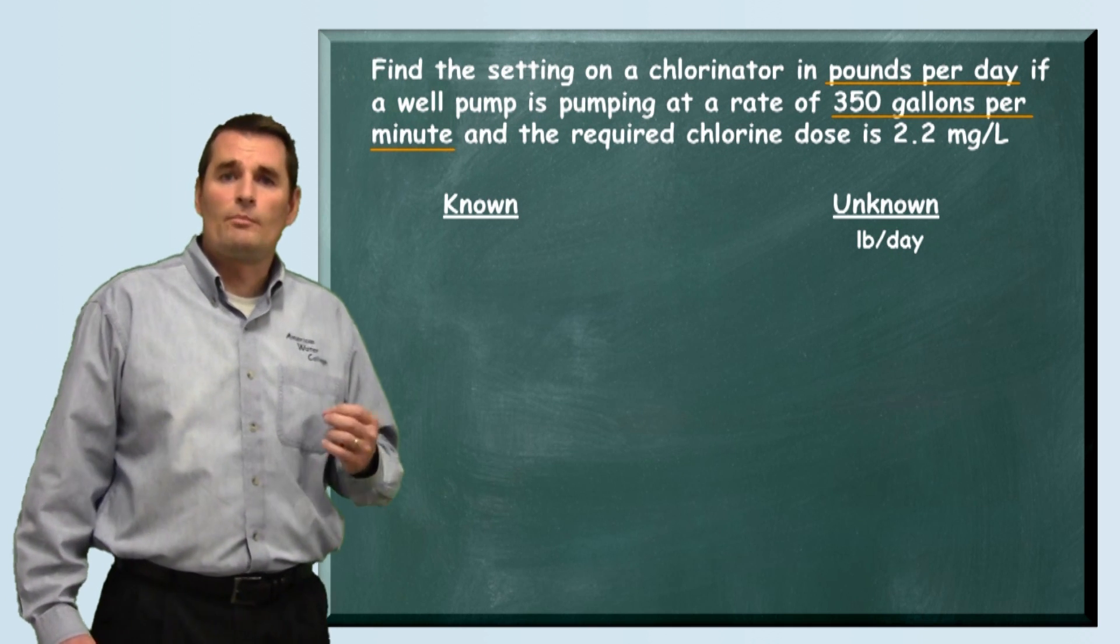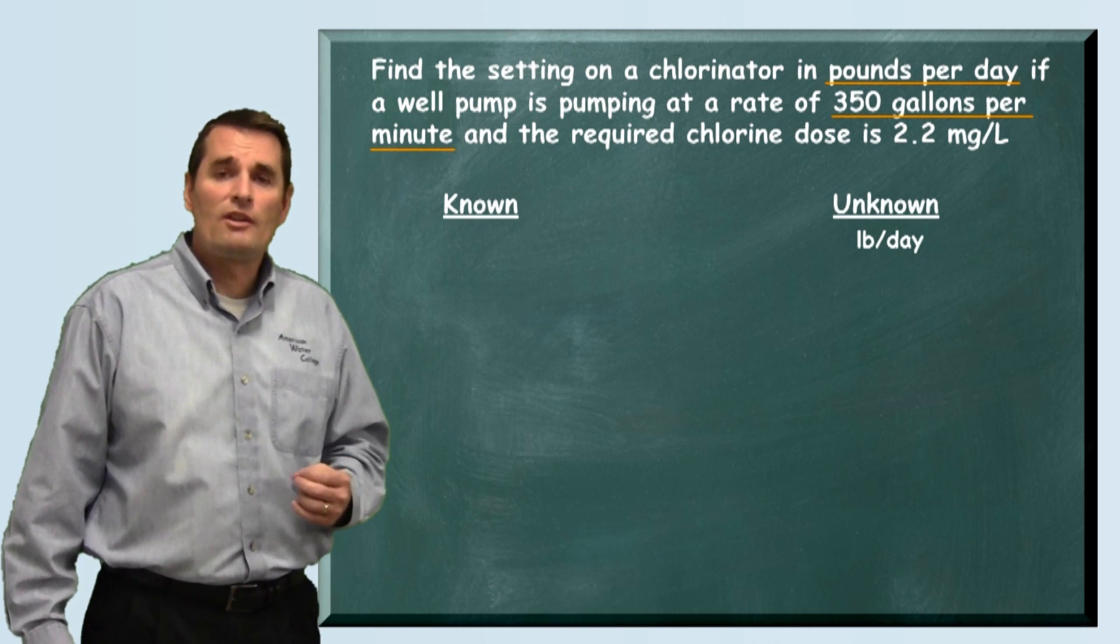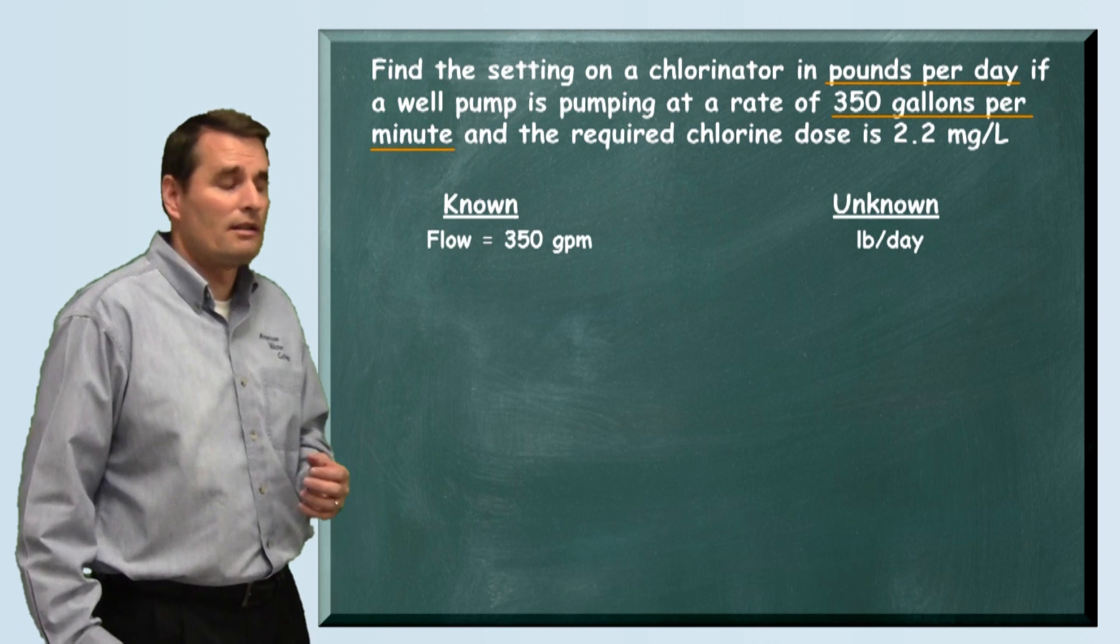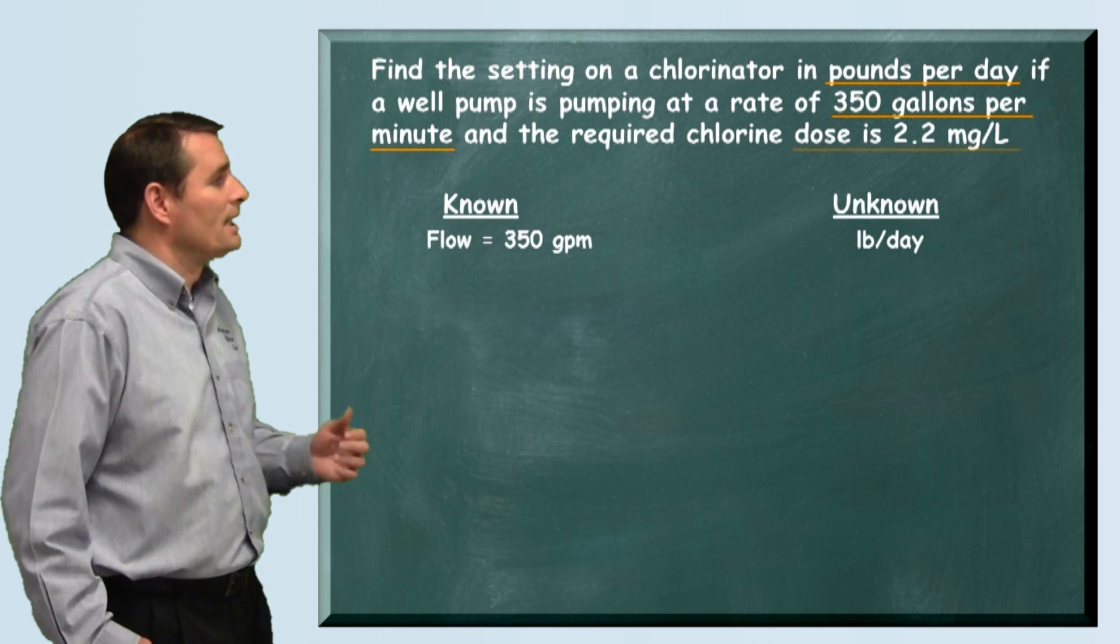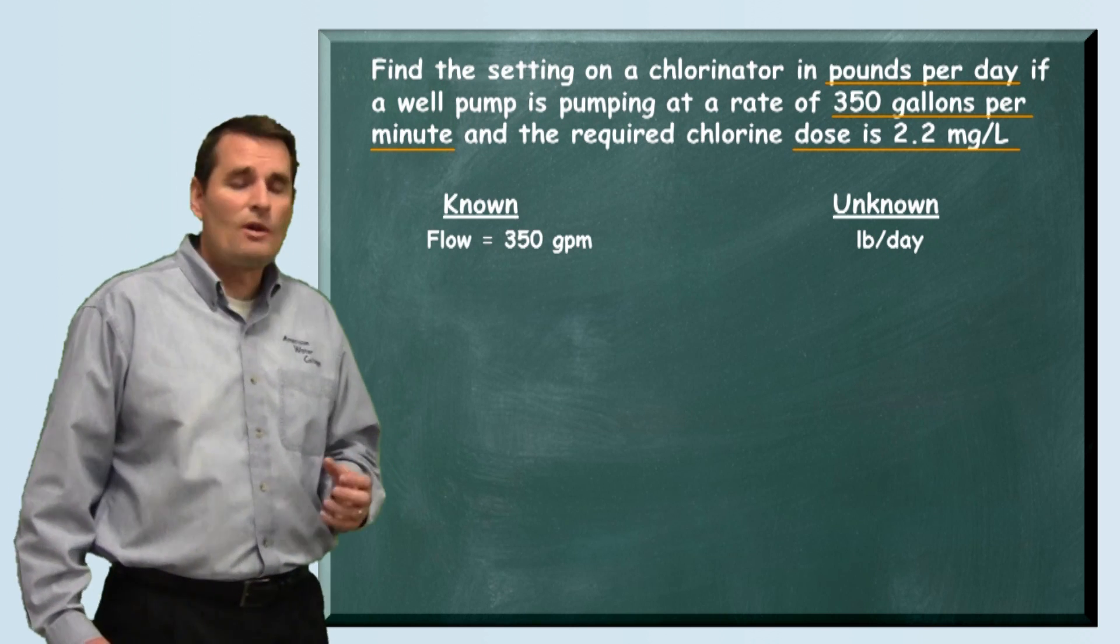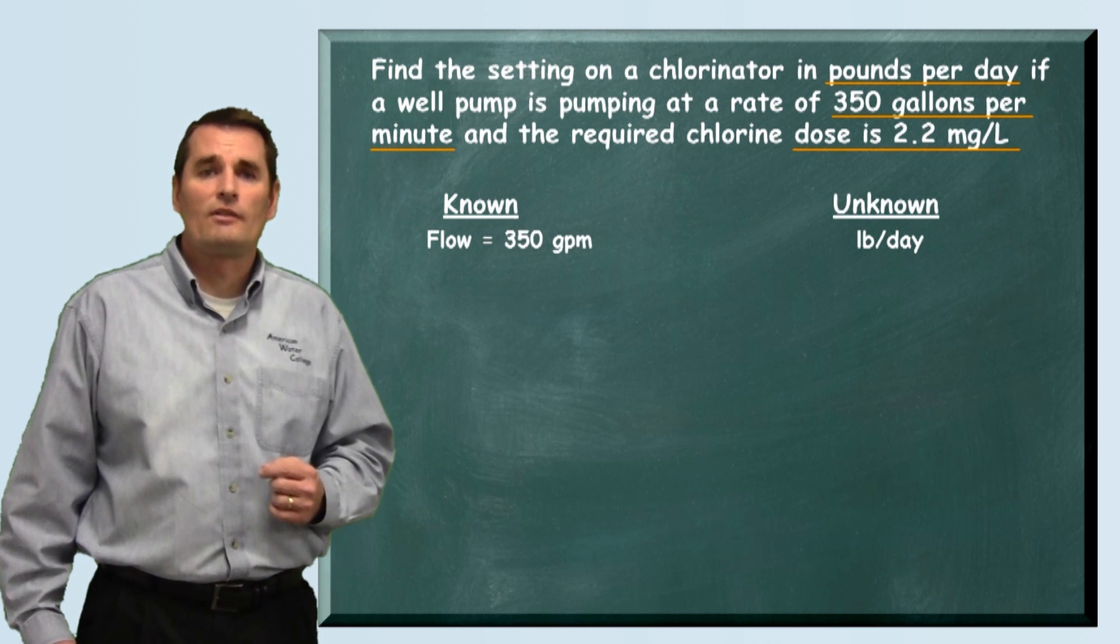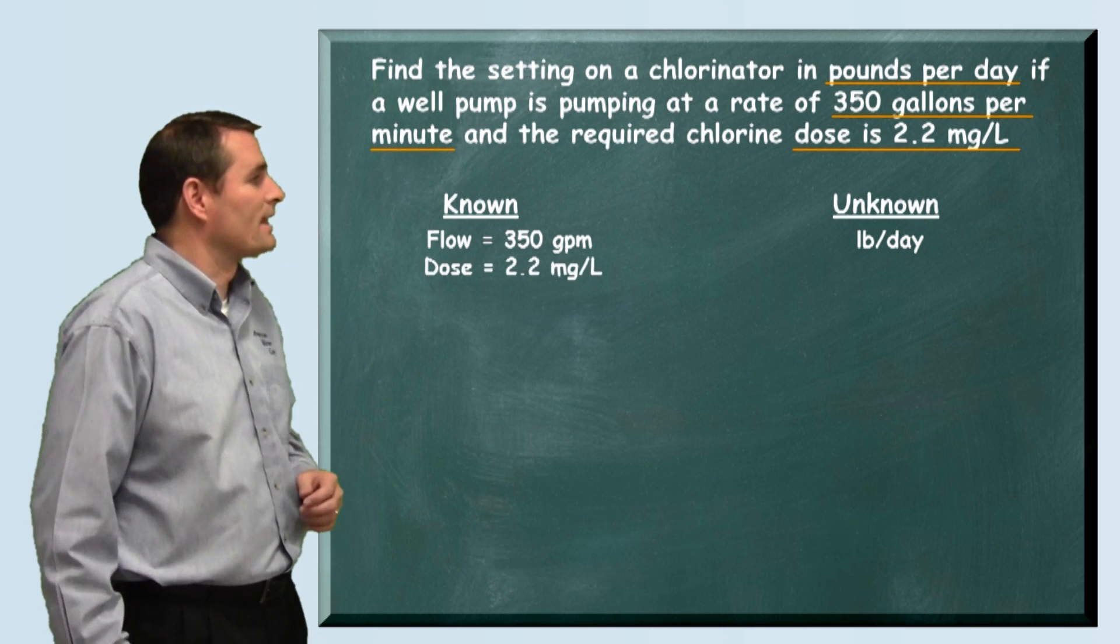They also tell us that we're pumping at a rate of 350 gallons per minute so we'll write that down. And then lastly they tell us that we're dosing at 2.2 milligrams per liter so we write that down.